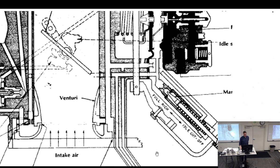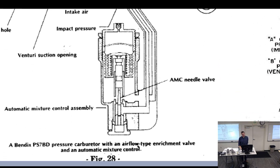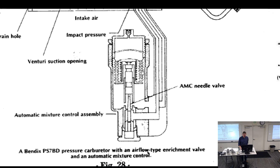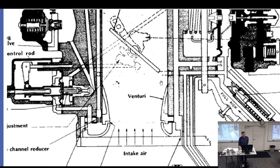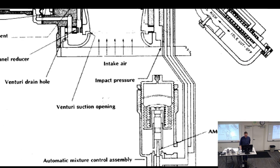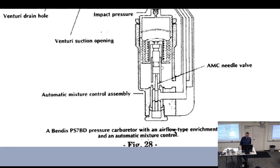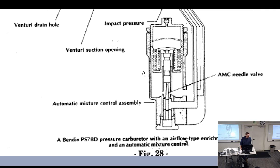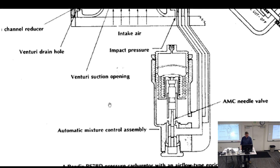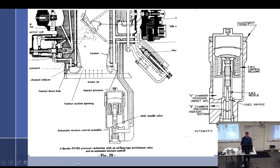What happens if the automatic mixture control gets a hole in the bellows? It runs rich at high altitude — just runs like normal without the lean compensation. These aren't that common. Some airplanes with these have actual settings like auto rich, auto lean, full rich — all kinds of different settings, which is kind of crazy. The mixture input is taken through the bleed between A and B.